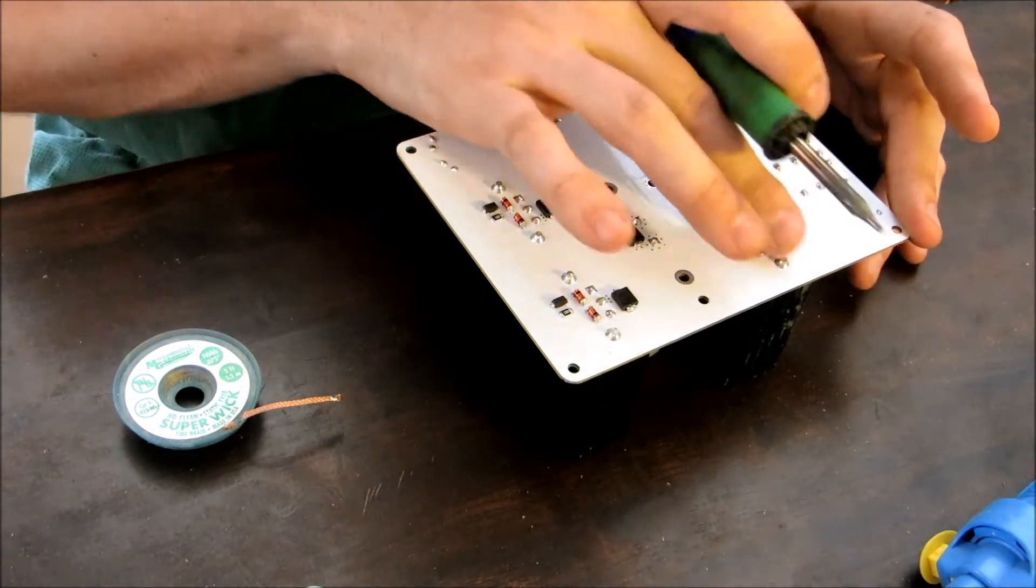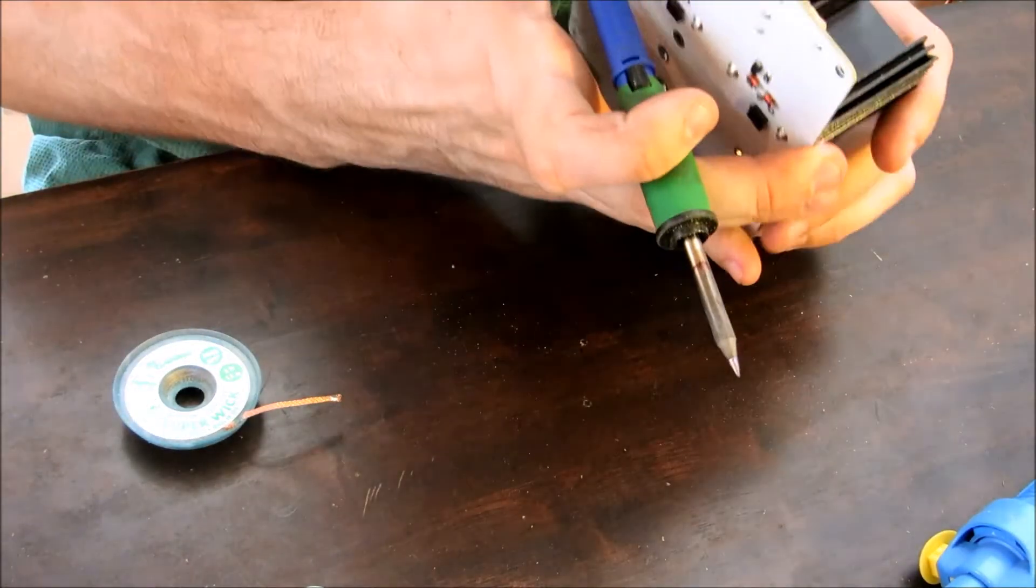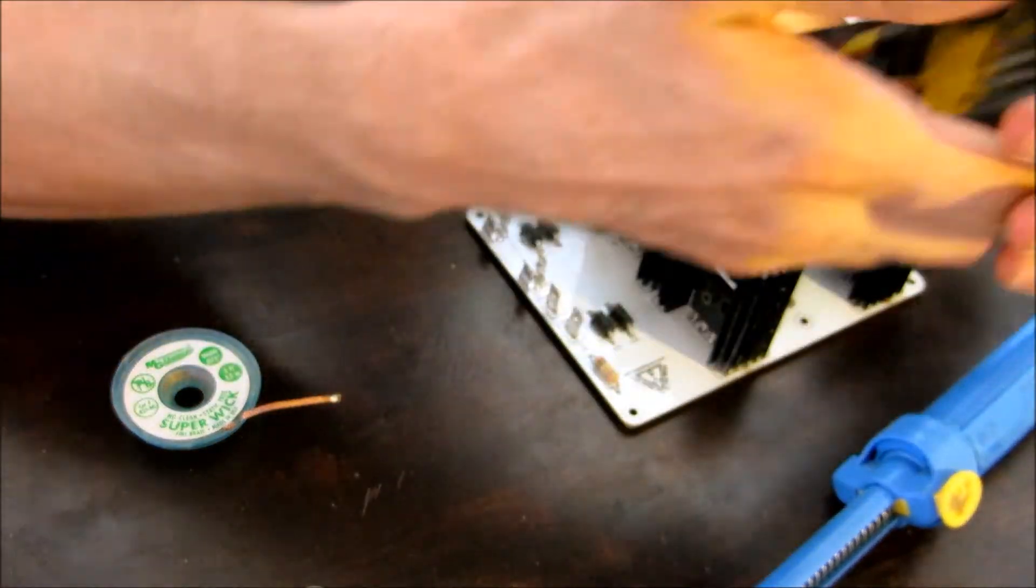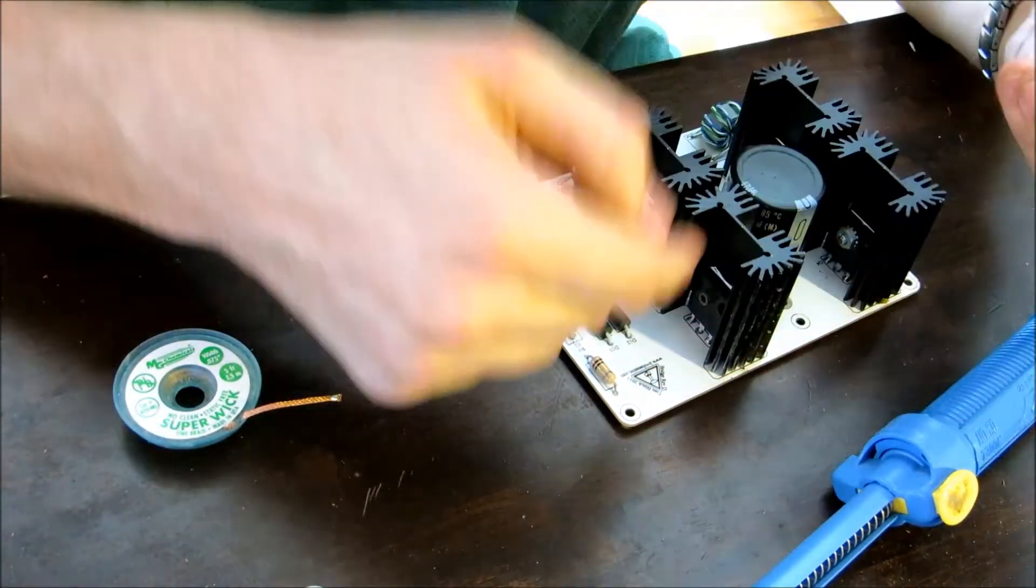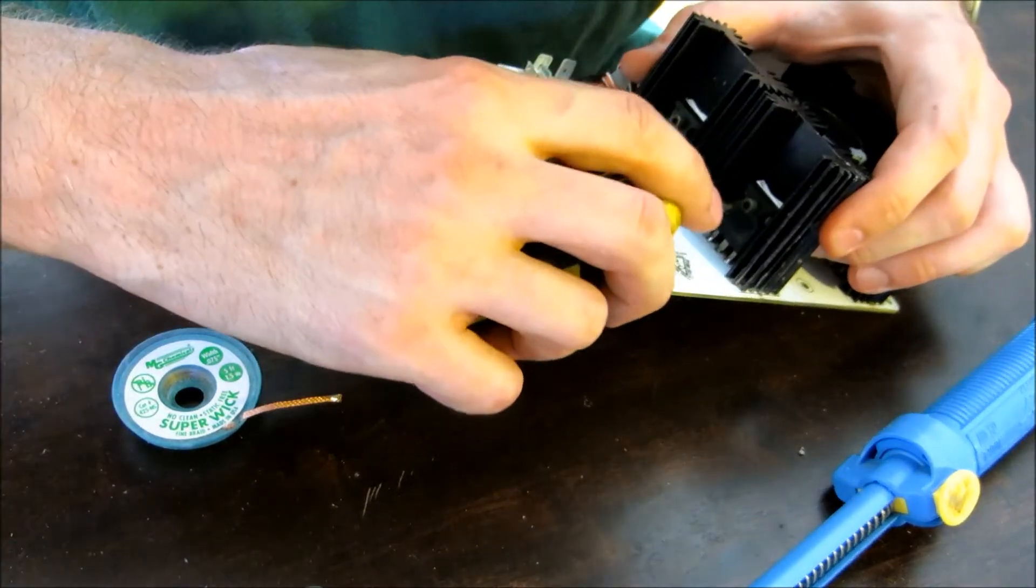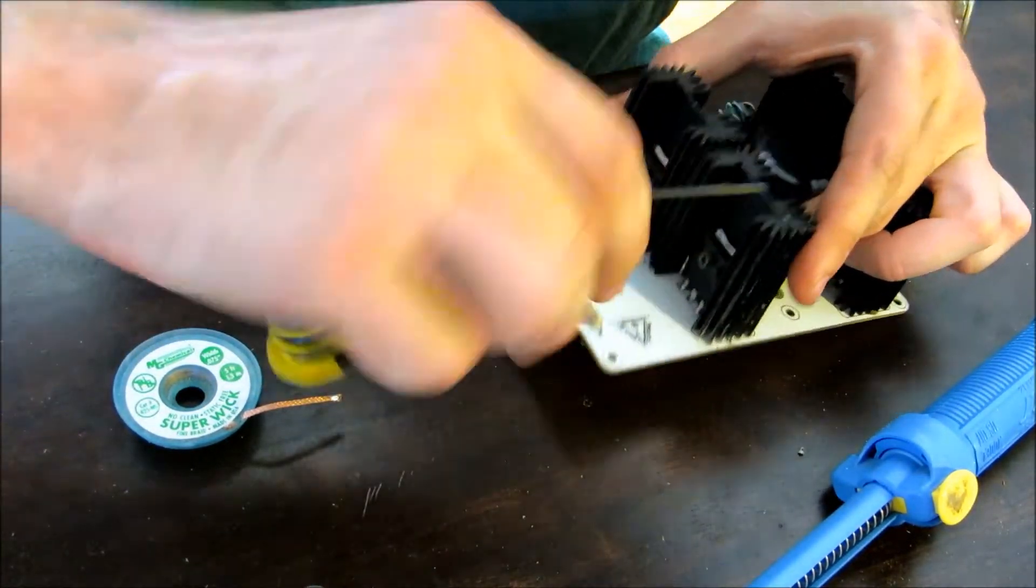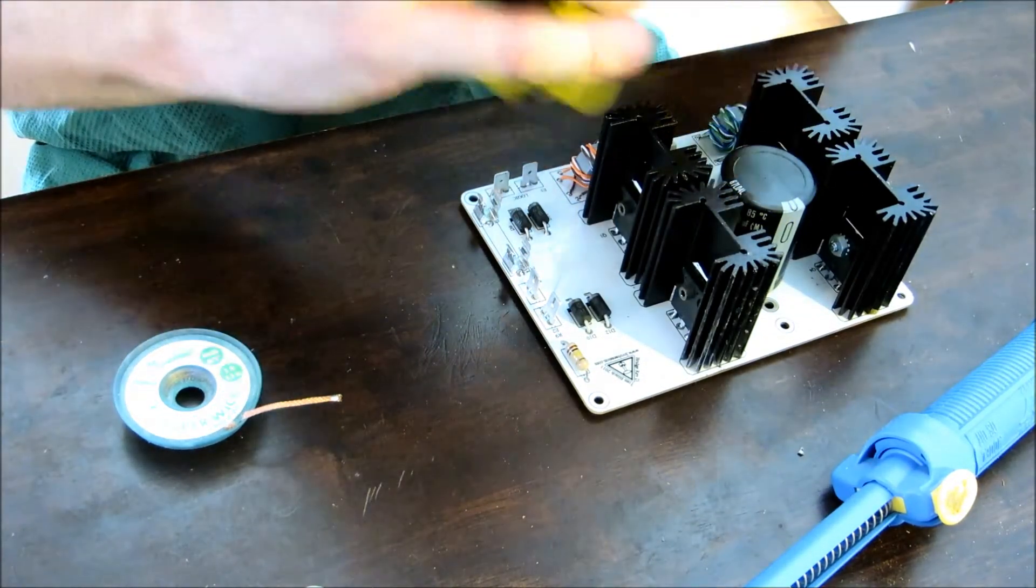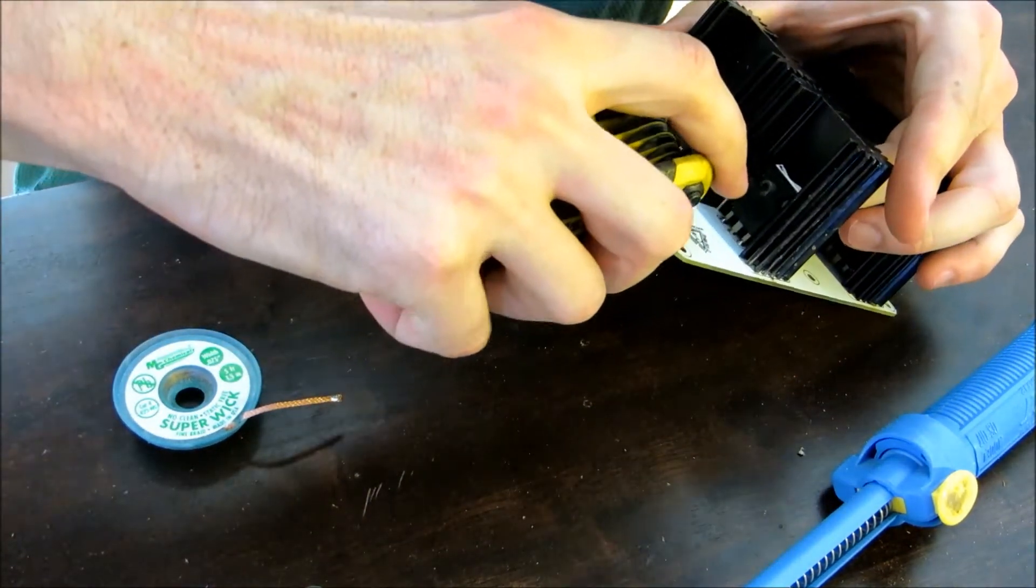All right, so now that you know it's this side, the first thing you want to do, which is going to make this about 10 times easier than it would be, is you want to remove the screws and push the IGBTs off the heat sink, because that's what's going to be, or your heat's going to be going into the heat sink, and it's going to be a lot harder.